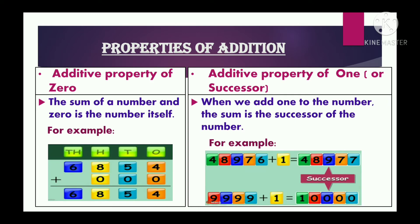Now the third property is the additive property of 0. It says the sum of a number and 0 is the number itself. For example, 6854 plus 0: after adding you get 6854 again. It means if we add 0 with any number it will not change the answer — we get the number itself.